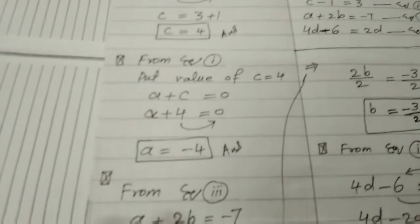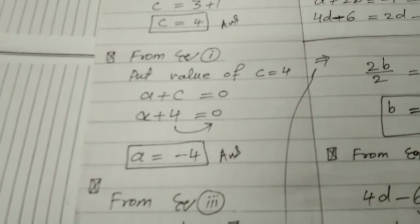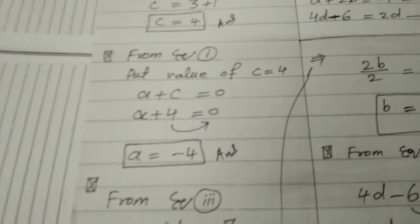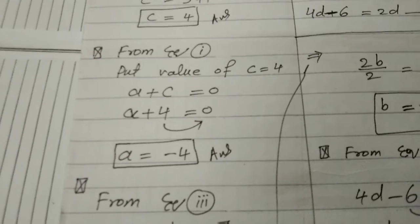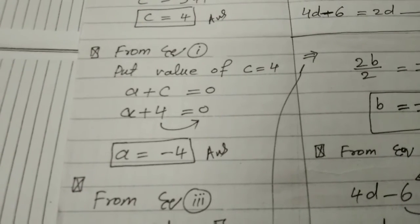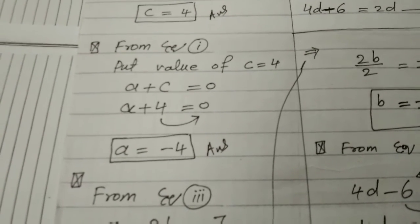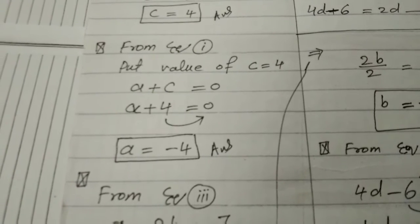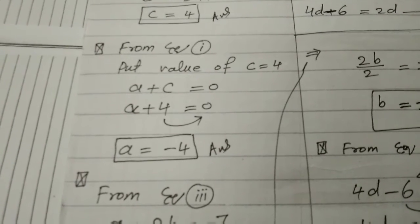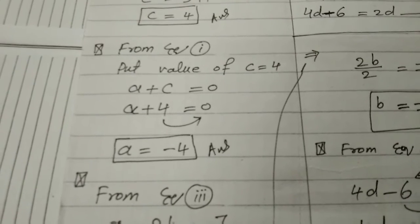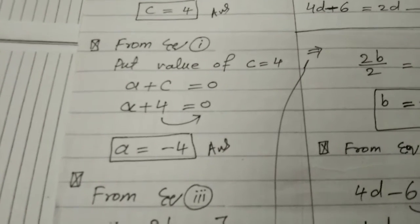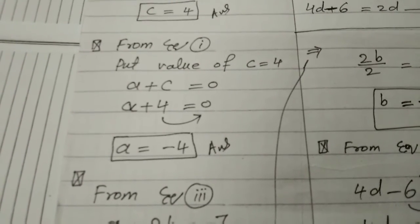Move toward the next step. From equation 1, put value of c is equal to 4. a plus c is equal to 0. Put the value of c, c is 4. We will take 4 toward the 0 and it will be minus 4. So we have a is equal to minus 4.